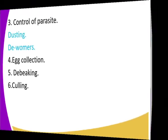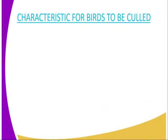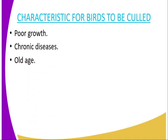Culling is also another routine management practice. The characteristics of birds to be culled include: number one, poor growth — those birds which have poor growth should be culled out. Number two, chronic disease. Number three, old age — birds which are old should be culled by selling or slaughtering them because they have a low level of production, laying few eggs, and their body weight is very small. It is uneconomical because they feed a lot but don't produce many eggs.